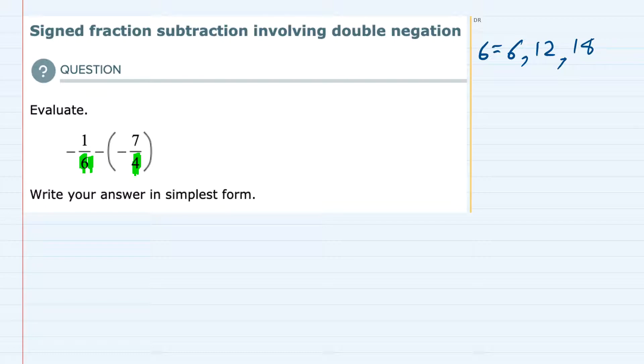And do the same thing for 4. The multiples of 4 are 4 times 1, which is 4, 4 times 2, which is 8, 4 times 3, which is 12.